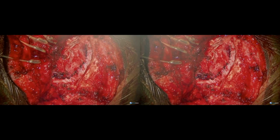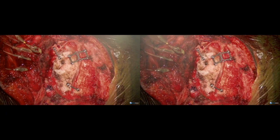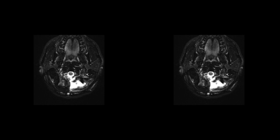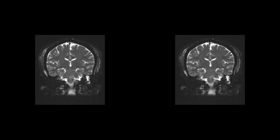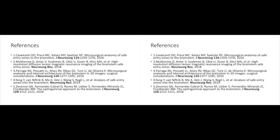The dura is closed in a watertight fashion, followed by replacement of the bone flap. The muscle is closed in a multi-layered fashion followed by running locked prolene on the skin. Postoperative imaging revealed complete resection of the malformation. The patient had a dramatic improvement in his upper extremity strength, but minimal improvement in his abducens palsy at two weeks of follow-up. He had no new neurologic deficits or other complications.